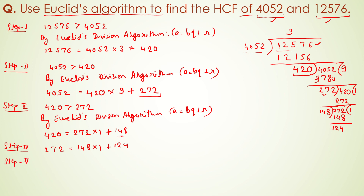We have got a remainder again, so we move to step 5. Now 124 is the divisor and 148 is the dividend. This divides only one time again, giving a remainder of 24. So at step 5 we write: 148 equals 124 into 1 plus 24.